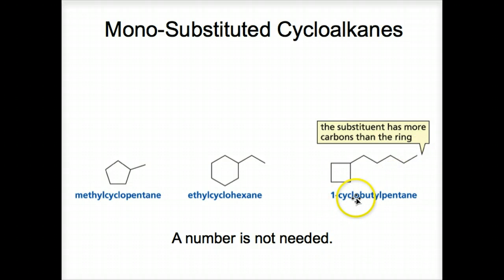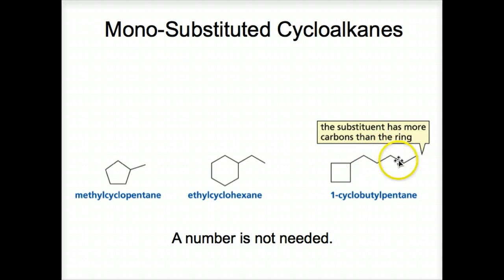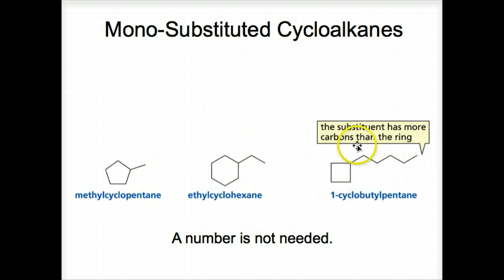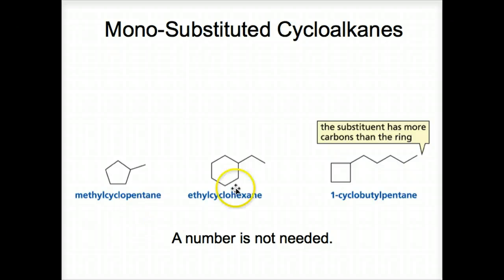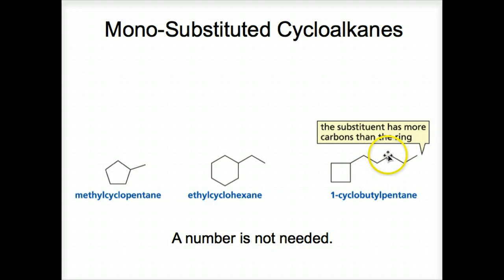Notice we say 1-cyclobutylpentane — we specify where the cyclobutyl structure is. It's off the number one carbon: one, two, three, four, five. This is the number one carbon bonded to the cyclobutane that we now call cyclobutyl. The number isn't needed because we assume it's number one in these cases. Over here, the cyclobutyl could be off of number two, three, or number four.